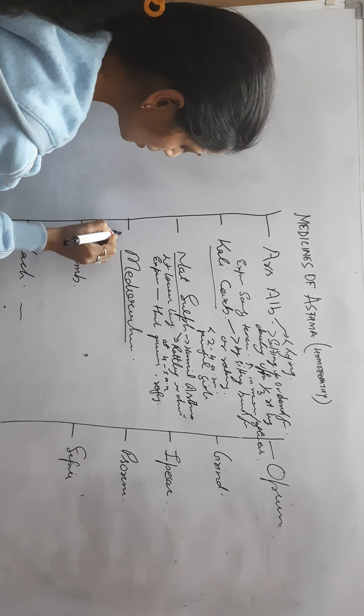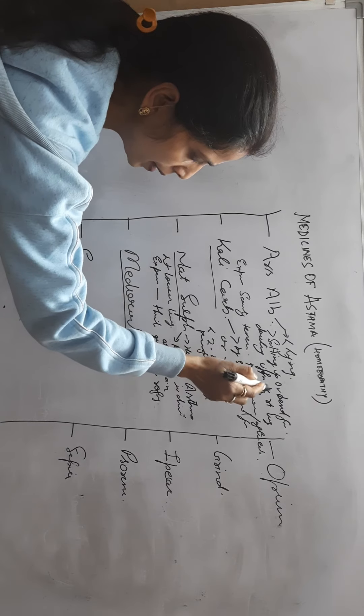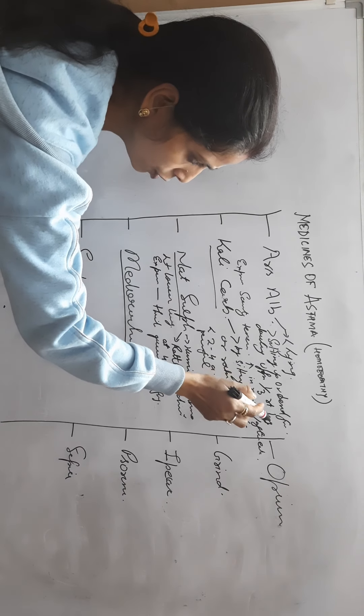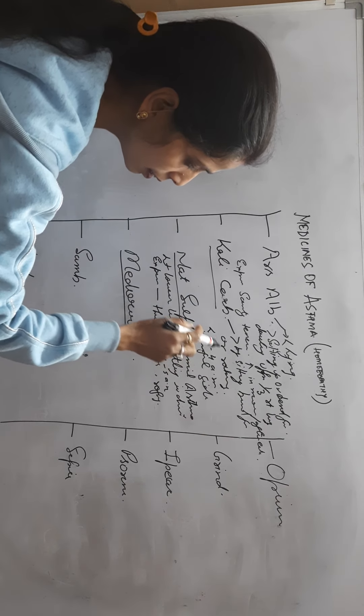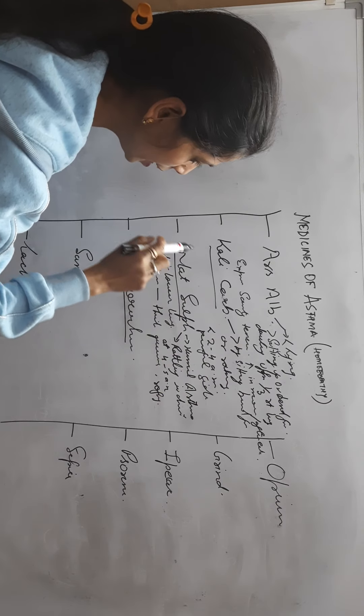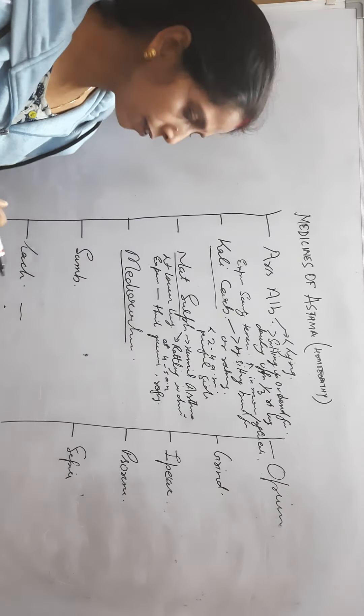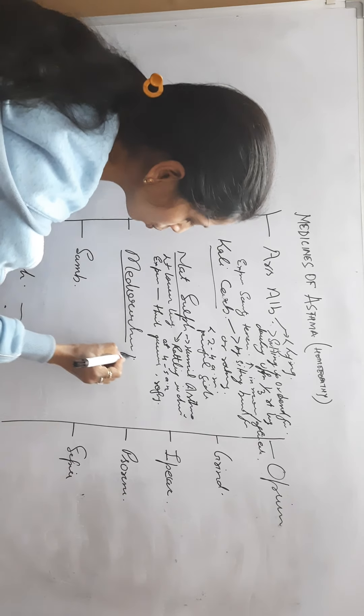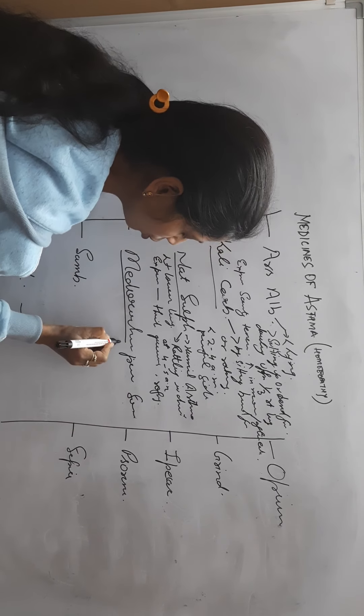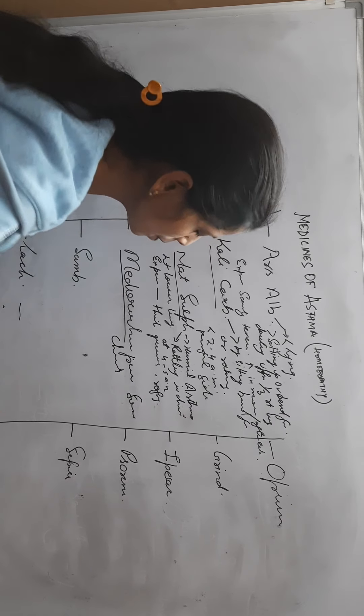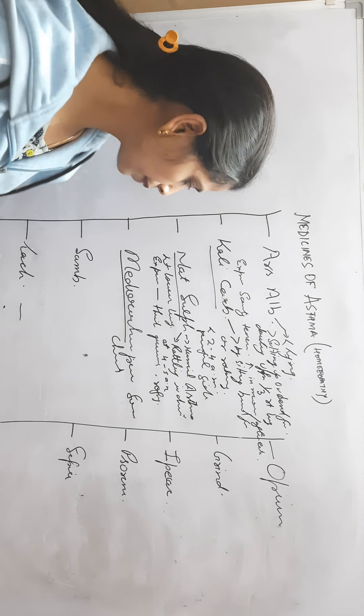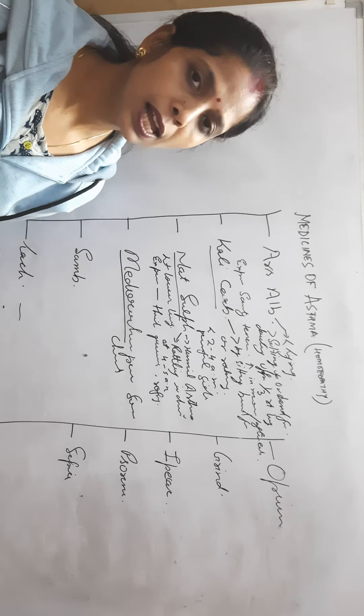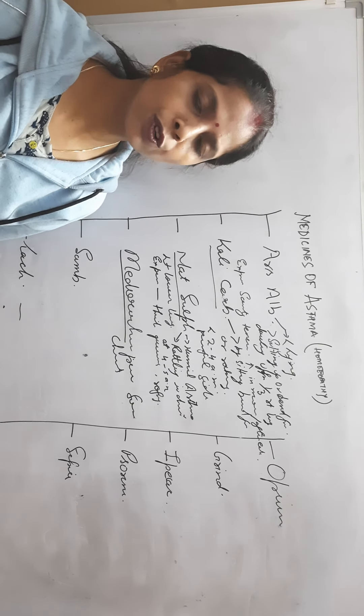Here pain is upper third of right lung, but in case of Medorrhinum there is pain and soreness throughout the chest. Amelioration by lying on face with protruding tongue.